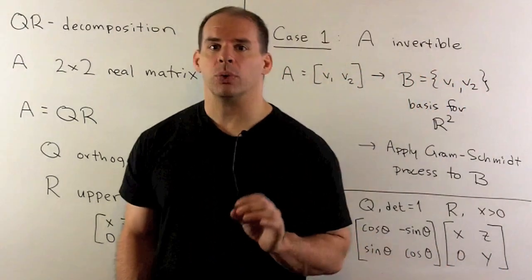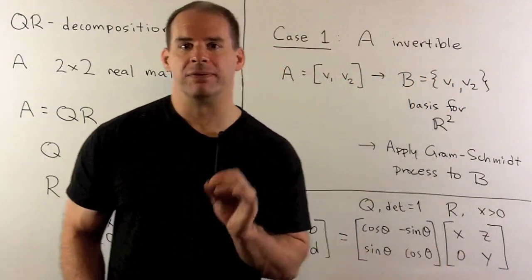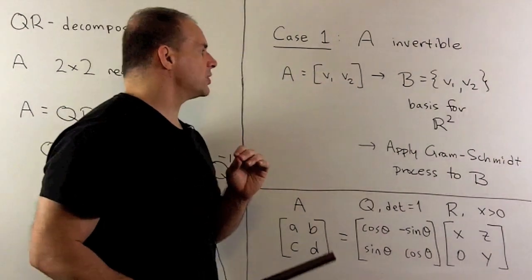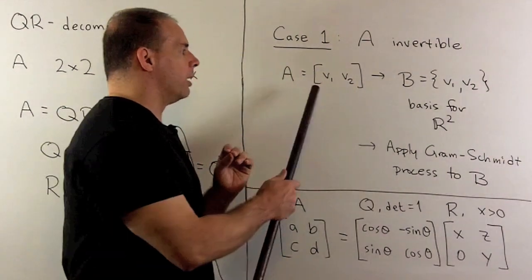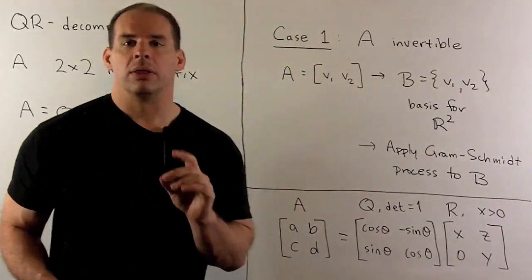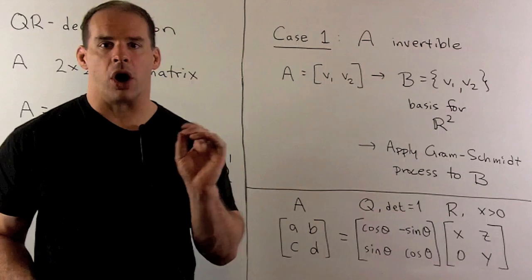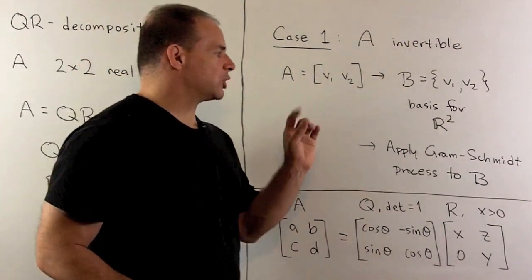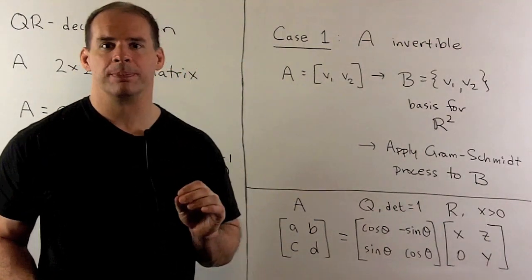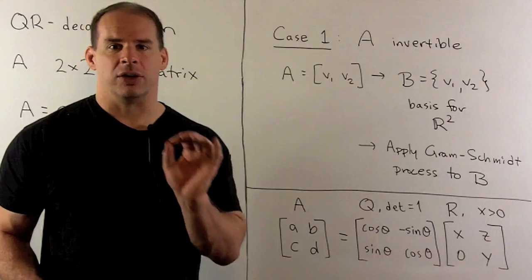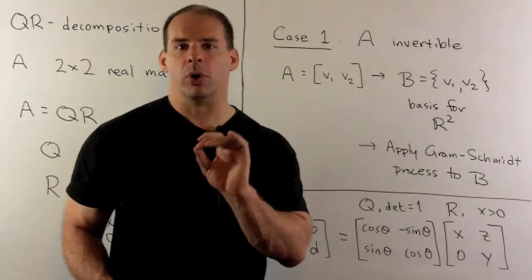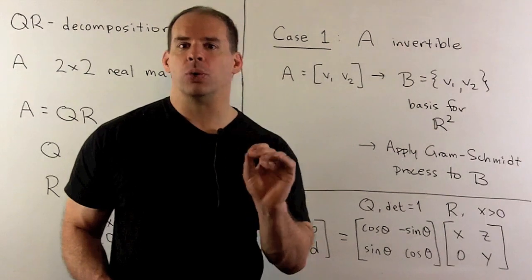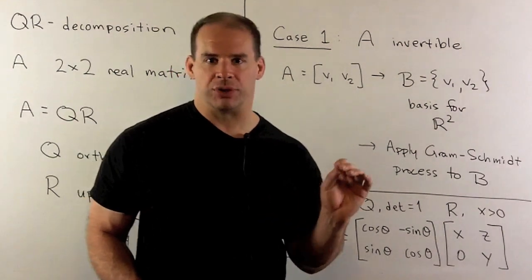In our first case, we'll assume that A is invertible. If we consider the columns of A, column V1 and V2, they form a basis for R2. Then we can apply the Gram-Schmidt process to our basis. The equations that come out, when we put them in matrix form, will give us a QR decomposition for A.